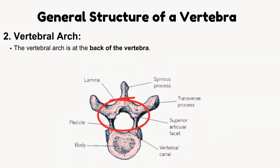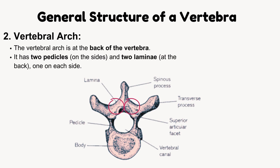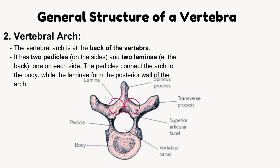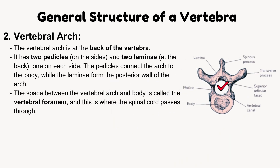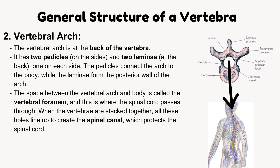Vertebral arch. The vertebral arch is at the back of the vertebra. It has two pedicles on the sides and two laminae at the back, one on each side. The pedicles connect the arch to the body, while the laminae form the posterior wall of the arch. The space between the vertebral arch and body is called the vertebral foramen — this is where the spinal cord passes through. When vertebrae are stacked together, all these holes line up to create the spinal canal, which protects the spinal cord.